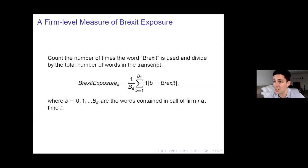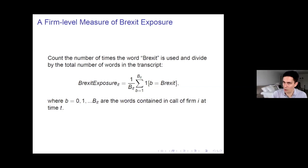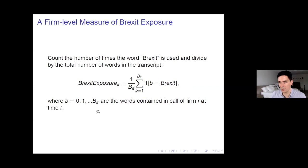Here's the methodology — it's very simple. We go through the text of each conference call and count how often participants say the word 'Brexit.' Brexit is an obvious application because it's very hard to talk about Brexit without saying 'Brexit,' and it has only one meaning, so there's not much ambiguity. We construct this variable for each firm in each quarter: Brexit exposure of firm i in quarter t is the total number of times they say 'Brexit' divided by the total number of words in the conference call transcript in that quarter.